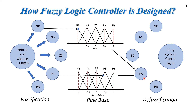That positive small output can maintain the system in the balanced state or at the desired state. The last stage is defuzzification, where the fuzzy value of the control output is converted again into a mathematical or exact value.